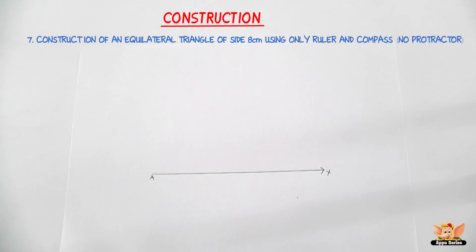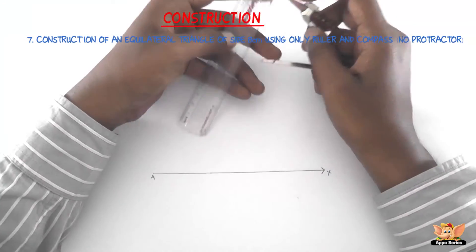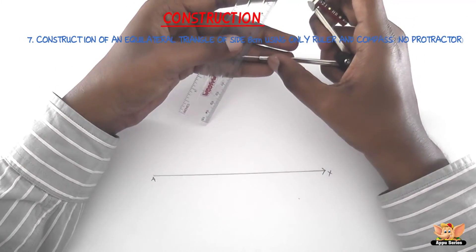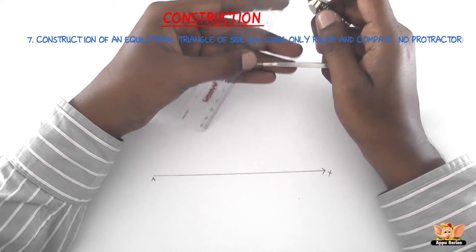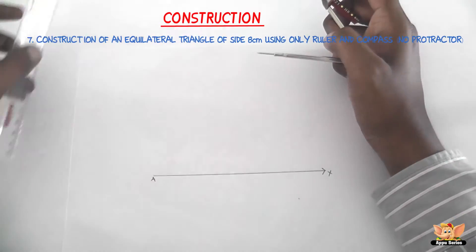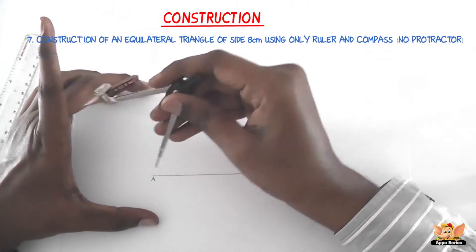So the length of the given triangle is 8 centimeters. So let us measure 8 centimeters using a compass on the scale. Make sure the two ends of the compass are exactly 8 centimeters apart by using a graduated ruler.